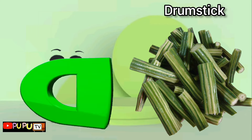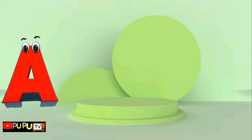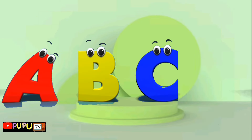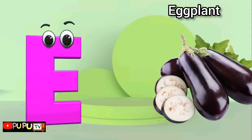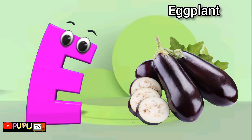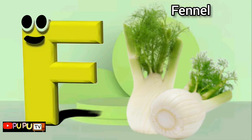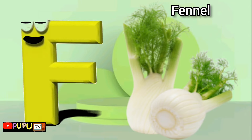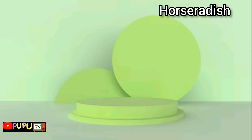D is for drumstick, drumstick. E is for eggplant, eggplant. F is for fennel, fennel. G is for garlic, garlic. H...